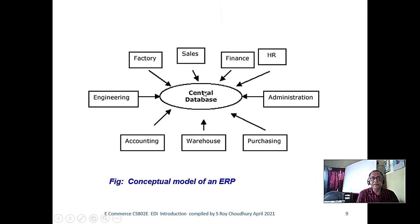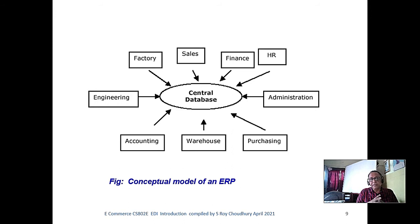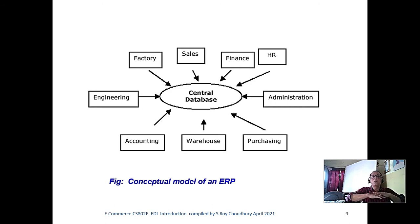There is a central database. You can think of any relational database — at that time non-relational database was not there. SAP generally preferred Oracle, so Oracle is the database. But SAP writes the whole middle intelligence layer and takes care of every data, putting it into their own encryption.